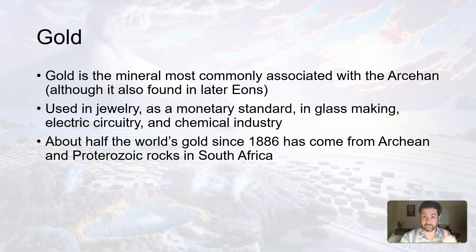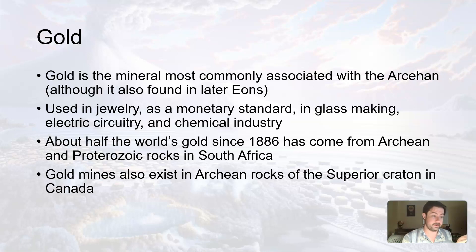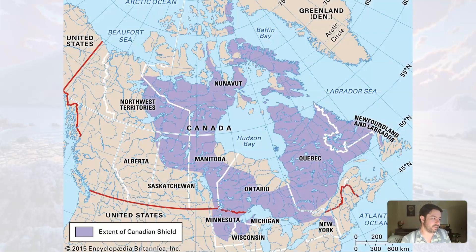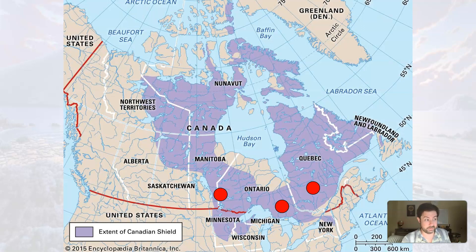About half the world's gold is coming from Precambrian rocks just in South Africa. Gold mines exist all over the world, but also, as an example close to here, in Archean rocks of the Superior Craton in Canada as well. Here is the Canadian Shield, which is part of the exposed part of the North American Craton. Where do we find some major gold mines in Canada or North America? All up in that shield. So gold is closely associated with being emplaced during the Archean. If you want to look for gold, a good place to start is old rocks.